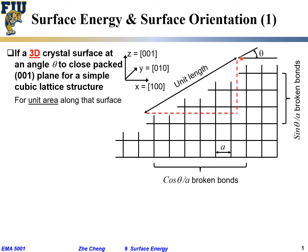If we say we have a unit length of surface — unit length from here to here, and going along the y-direction into the screen — that's our surface. If we are going to count, remember: how do you estimate surface energy? You have to count the number of broken bonds. The number of broken bonds along the [0,0,1] direction — going upward — those vertical bonds pointing upward all got broken.